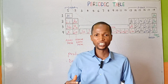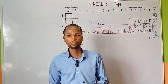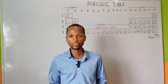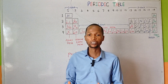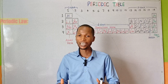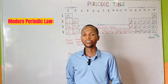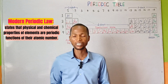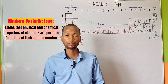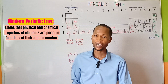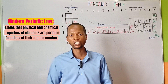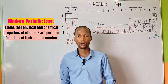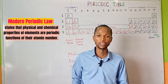So it was on the foundation of Mendeleev's discovery that the modern periodic table was built. The modern periodic law states that properties of elements — that is, physical and chemical properties of elements — are periodic functions of their atomic number or proton number.